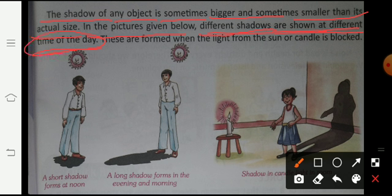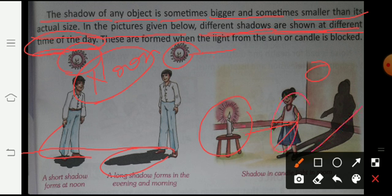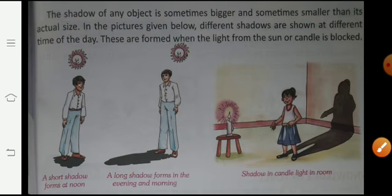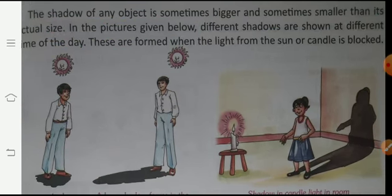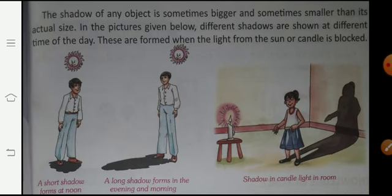At different times of the day, shadows are different. When the sun is at the top at noon, the shadow is shorter. In the evening when the sun is low, the shadow is longer. If a child is standing near a candle, the shadow can be bigger than the actual object. I hope this topic is clear. We will start the next topic in our next video. Thank you for watching.